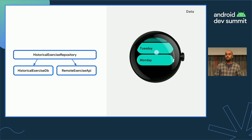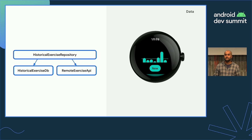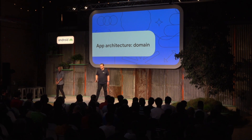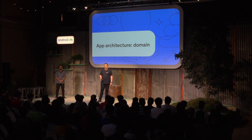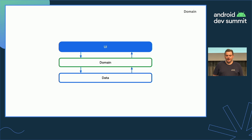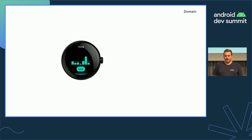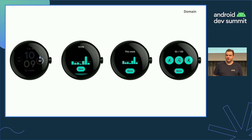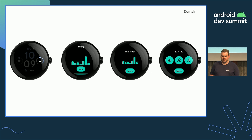Other screens in our app are simpler and don't need anything specific for Wear, but it could still be worth refactoring to avoid duplicating code. The domain layer is described as an optional layer that sits between the UI and the data, responsible for encapsulating business logic that's either complex or reused by multiple view models. In the generic fitness Wear app, we want to display a chart showing the past week's progress, and we also have a tile showing the same chart, plus a complication and tile each showing minutes exercised for the current week.